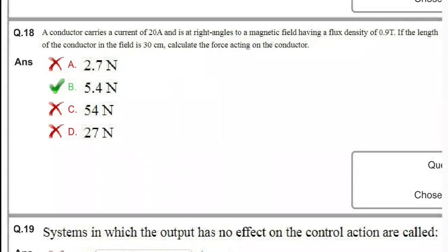Next question: a conductor carries a current of 20 amperes and is at right angles to a magnetic field having flux density 0.9. If the length of the conductor in the field is 30 centimeters, calculate the force acting on the conductor. The formula is F = B·i·l·sinθ, where θ = 90 degrees.